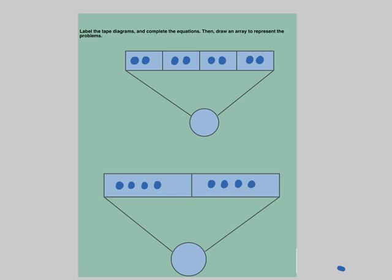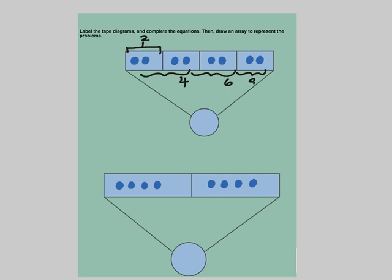Look at the tape diagrams — you can see blue dots in the tape diagram. Let us label the tape diagram. This group has 2, so let us mark it like so. This has 2 in it. So 2 plus 2 will make 4, and 4 plus 2 makes 6, and 6 plus 2 makes 8. The total 8 goes in the circle.